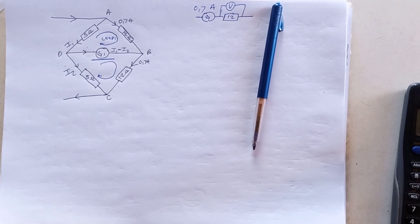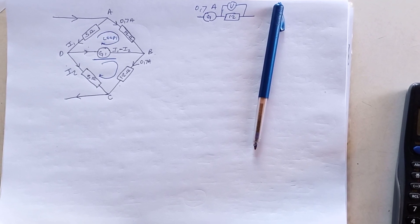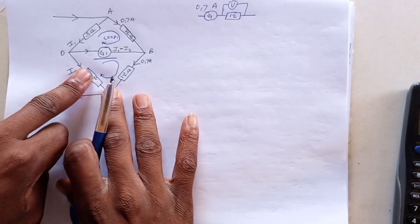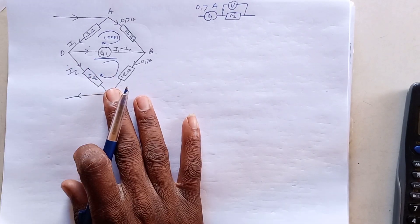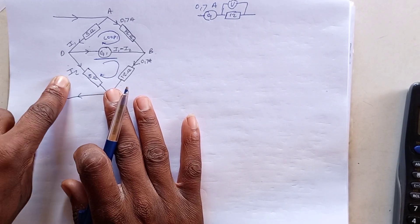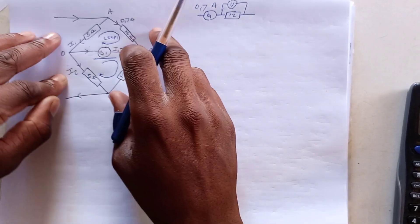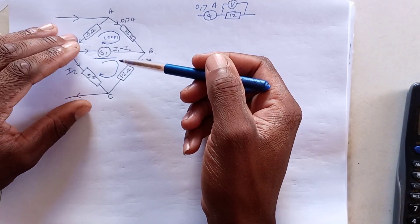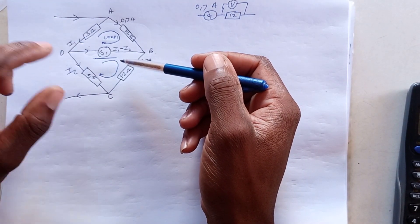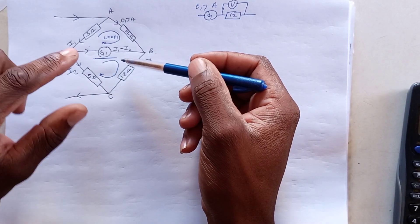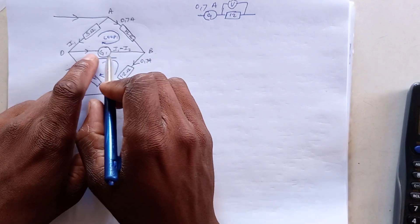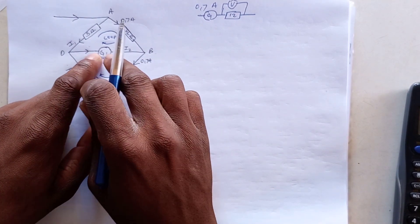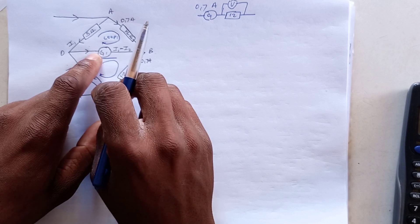Let us now do this example. This circuit will be calculating I1 and I2. The only difference with this example compared to the previous circuit is that instead of having a resistor here, we are now having a galvanometer.